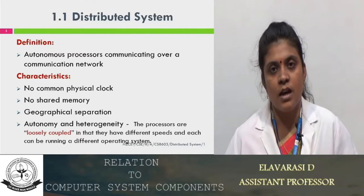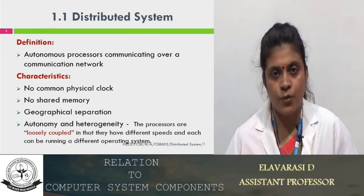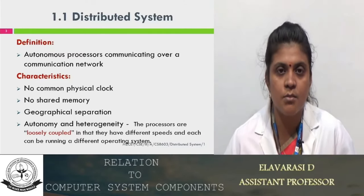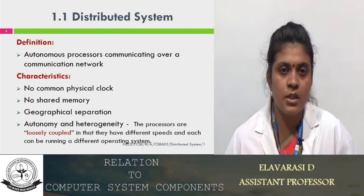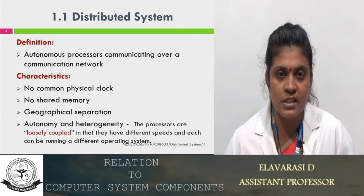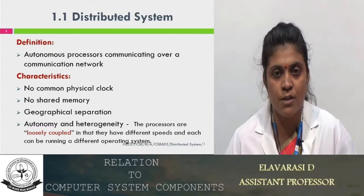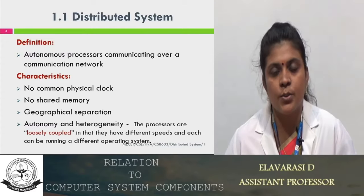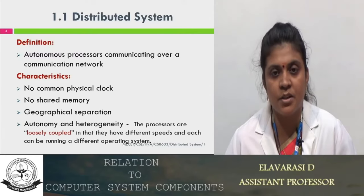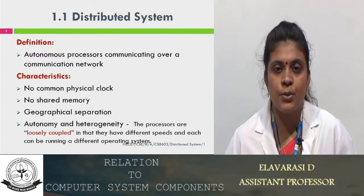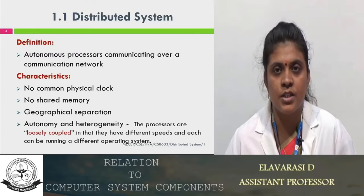These are the four characteristics of the distributed system: the first one is no common physical clock, the second one is no shared memory, the third one is geographically separated, and the fourth one is autonomy and heterogeneity.